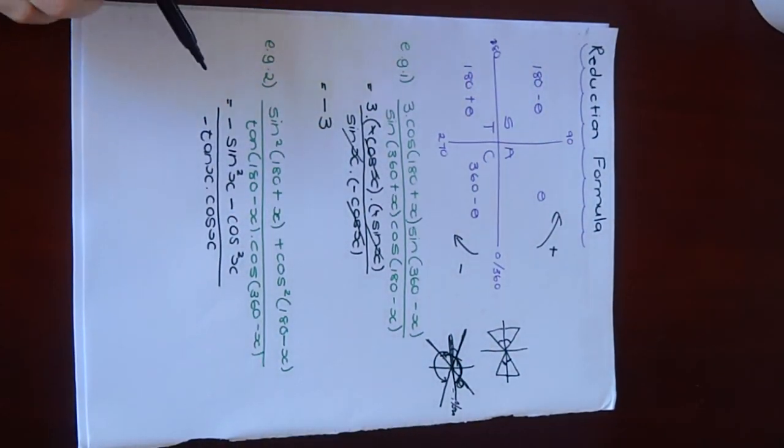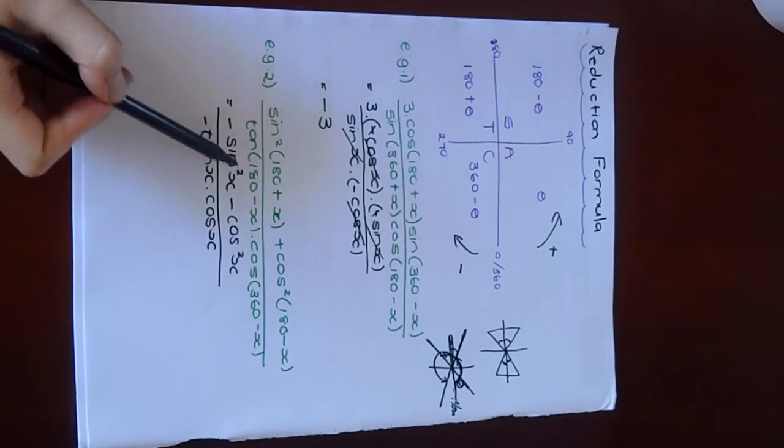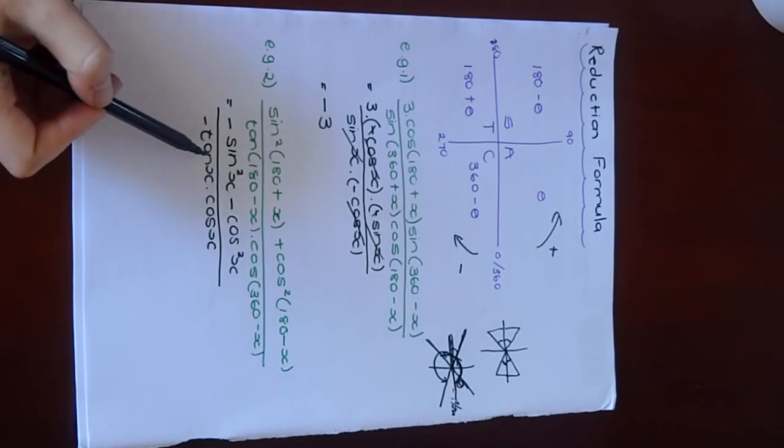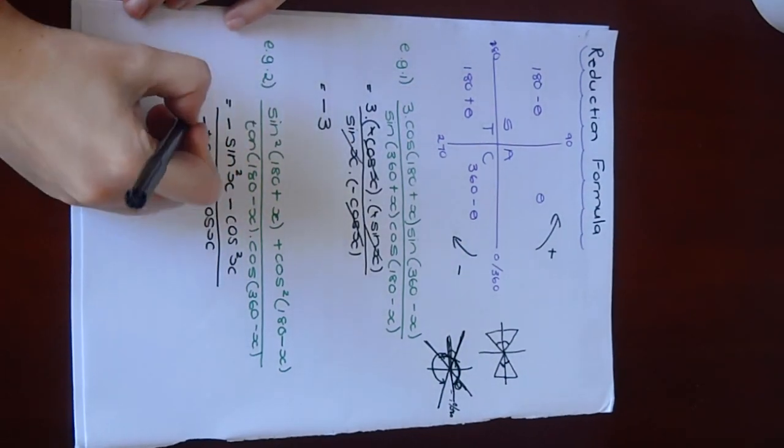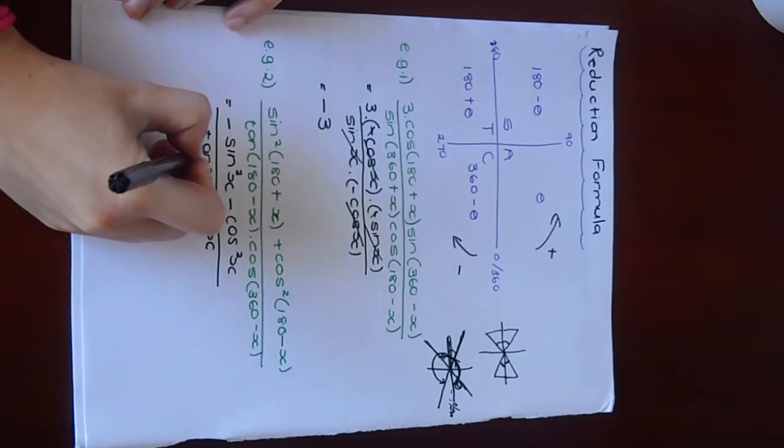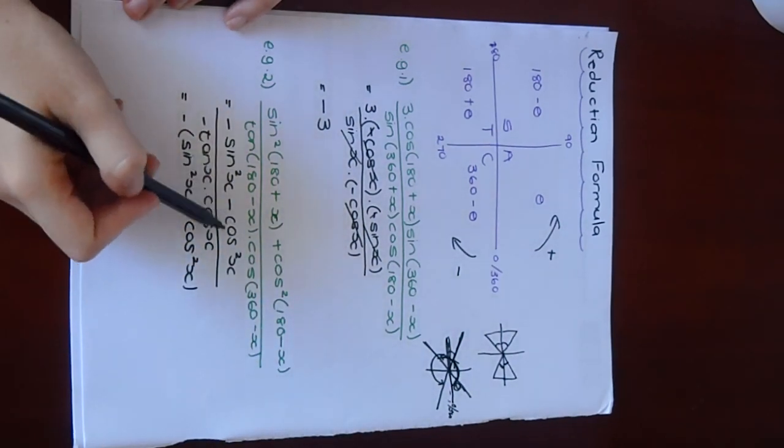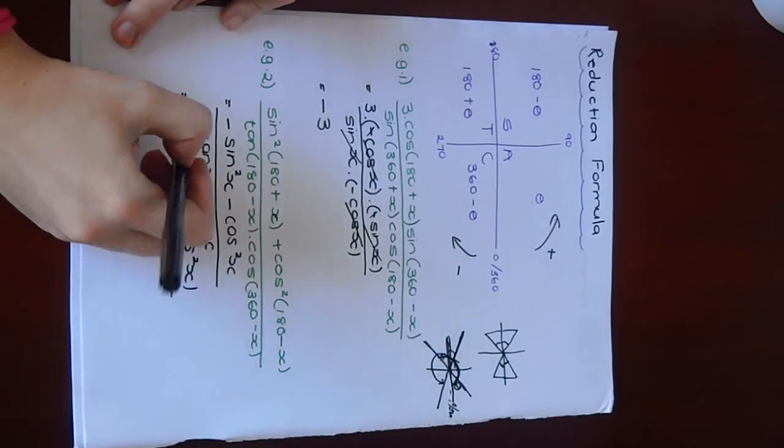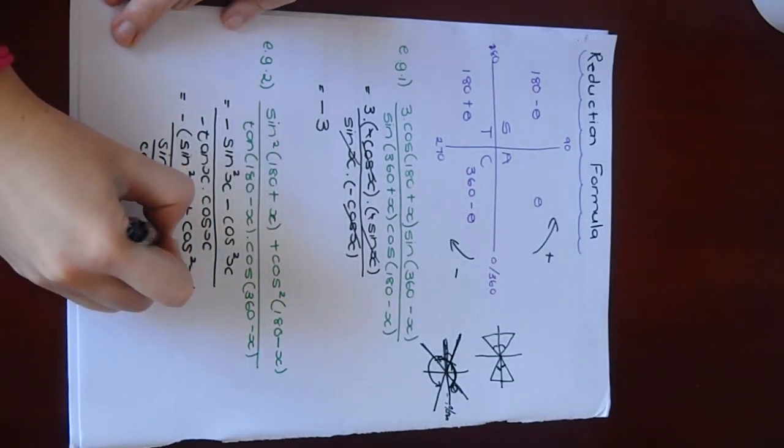You can simplify this further if you kind of have a look at the identities that we've done. If you look at the top, if you want to take out a negative, this will become negative bracket, sine squared plus cos squared, that'll be negative 1. The bottom here, you can change tan to sine over cos. I basically wanted to teach you this part, but it's good practice.